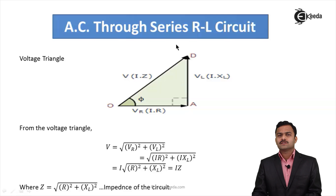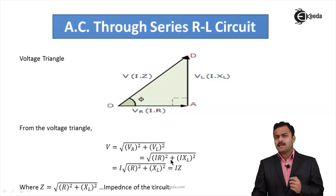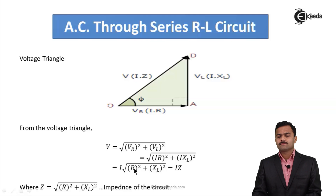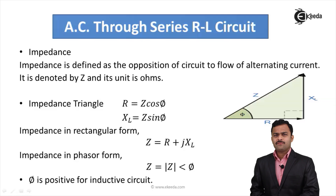This triangle, where all sides are voltages, is called the voltage triangle. In the voltage triangle, one side is VR = I×R, another side is VL = I×XL, and the hypotenuse is V (total applied voltage) = I×Z. Applying Pythagoras' theorem: V = √(VR² + VL²) = √((I×R)² + (I×XL)²) = I × √(R² + XL²).